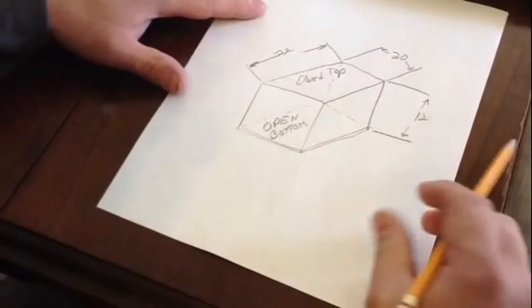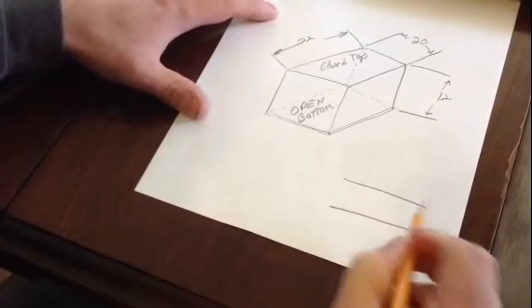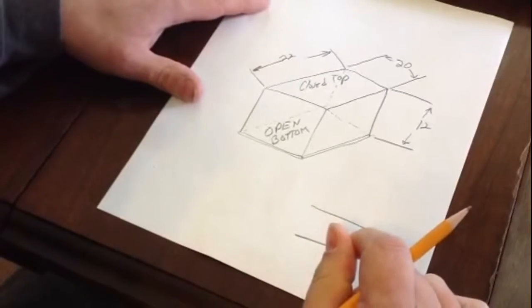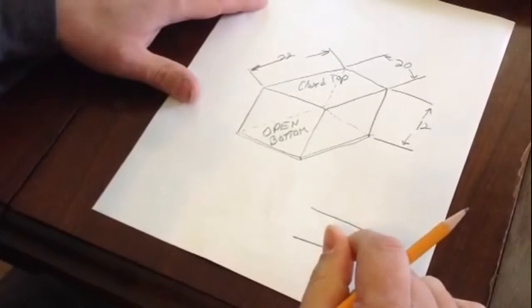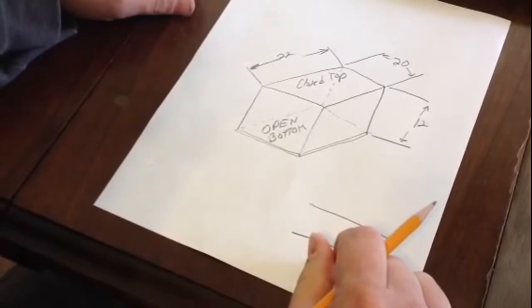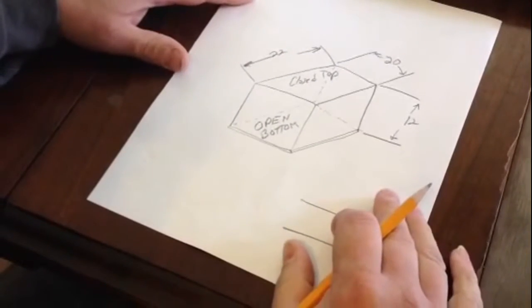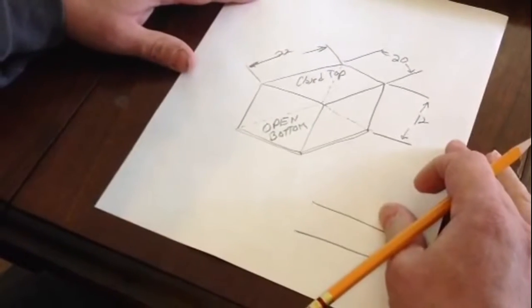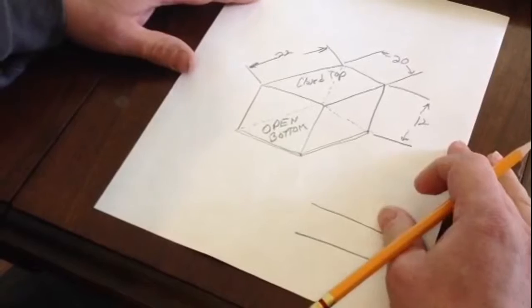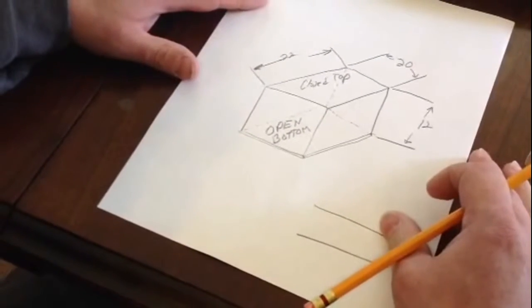So all of the dimensions are pretty much there. Put your name, your phone number, and that's pretty much all it takes to get a plenum made for the top of your furnace. Now if you take this into them, they might just look at it and understand everything and go ahead and make it.